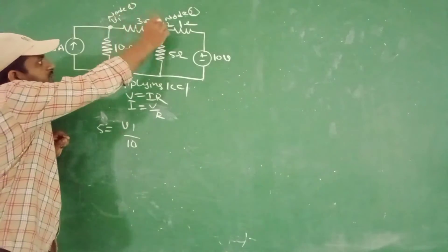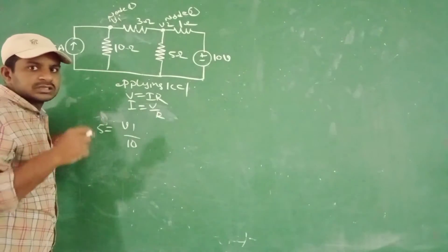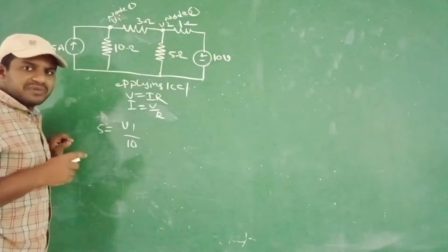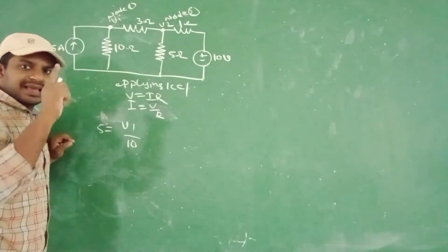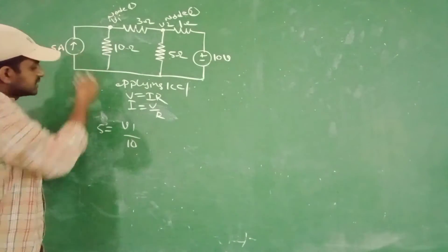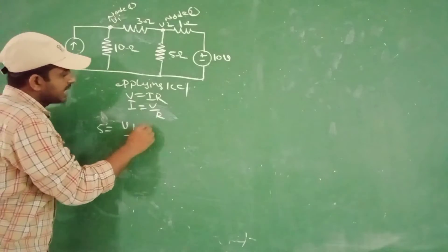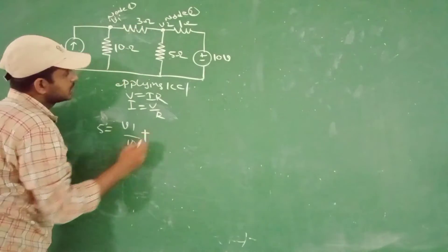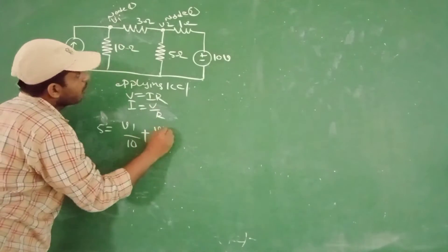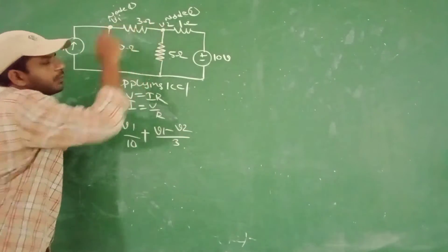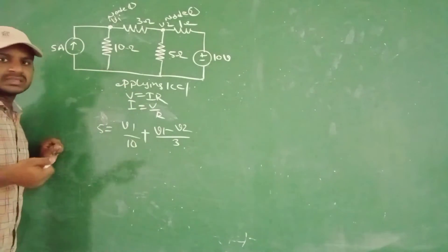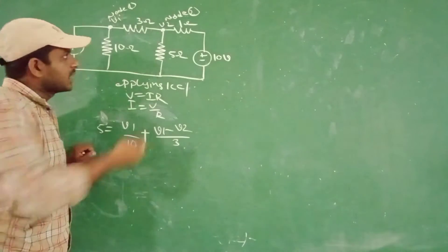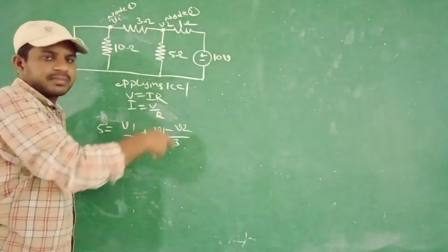Here we are referencing two nodes, so we are getting two expressions. These two expressions are also called two equations from the circuit diagram. If we want to calculate those two equations, finally we can get the current equations. So for node 1, if we go here, so 5 is the node — V1 by 10 and also plus — here some resistors are there.